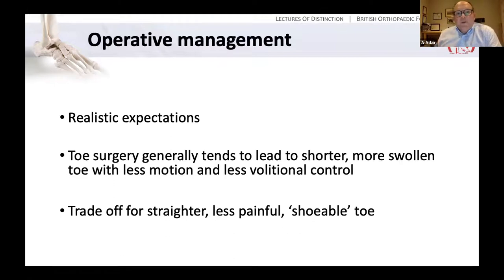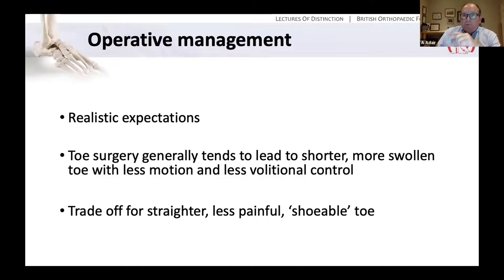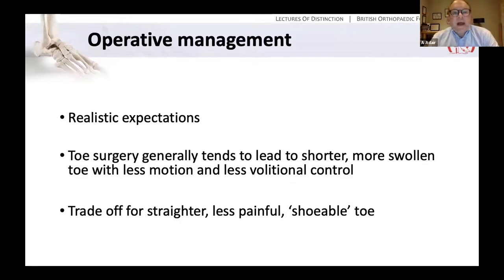When thinking about operative management of toe deformities, the patient has to have realistic expectations. We are trading off a deformed toe, often flexed at the PIP joint, for a straighter toe which is less painful but lacks some movement, is often shorter and often more swollen. The patient has to really be happy to trade off the deformity for a slightly straighter toe which is less painful.